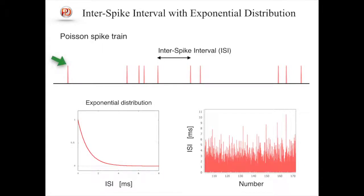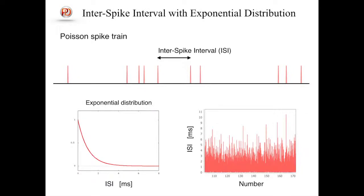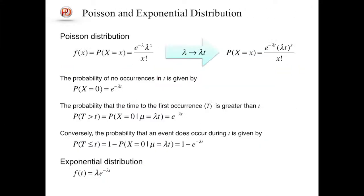The algorithm to generate a Poisson spike train is quite simple. Assume that the first spike has just happened at the current time of the simulation. First, calculate the next timing to make a spike by adding an inter-spike interval to the current time. The inter-spike interval is randomly generated based on the exponential distribution. When the simulation time reaches the next timing, a spike is created and the same process is repeated.